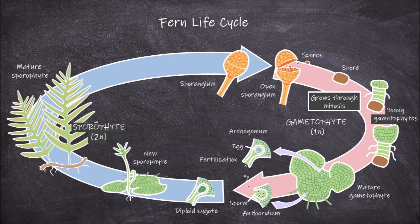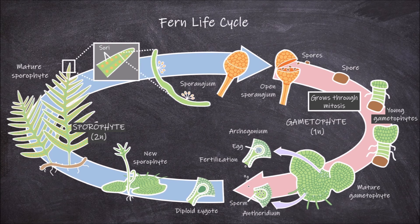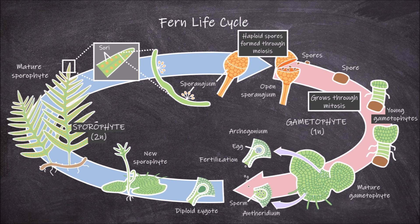Eventually, the sporophyte will mature and form small structures on the underside of the fern fronds called sori. Sori are actually small clumps of sporangia. Inside the sporangia, haploid spores are created through the process of meiosis. These spores are then released and the cycle continues.